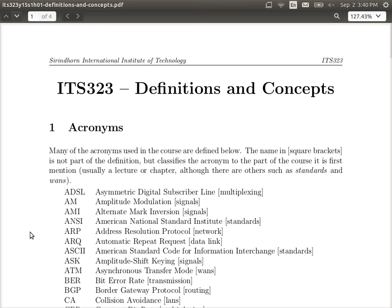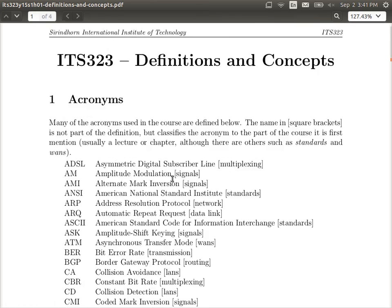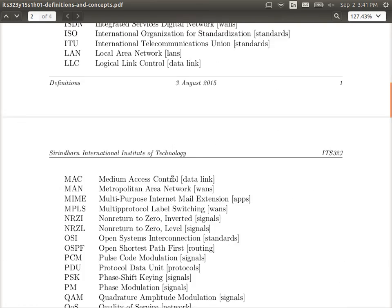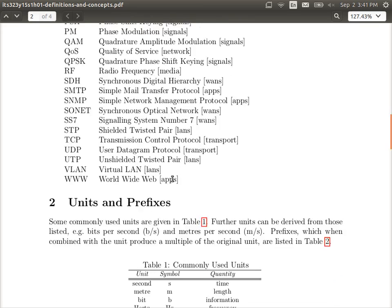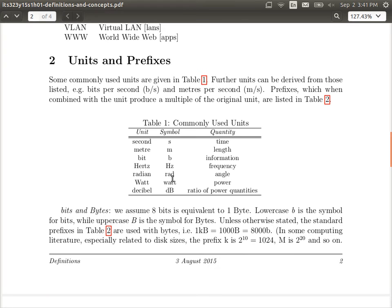You have a handout which is labeled definitions and concepts. It contains some acronyms that you can look through. You don't have to remember them all, but if you want to look up, you can see some of the common ones we'll use. Some summary of units and prefixes, that is the symbols that we're going to use for the course about hertz, watts, seconds and so on.